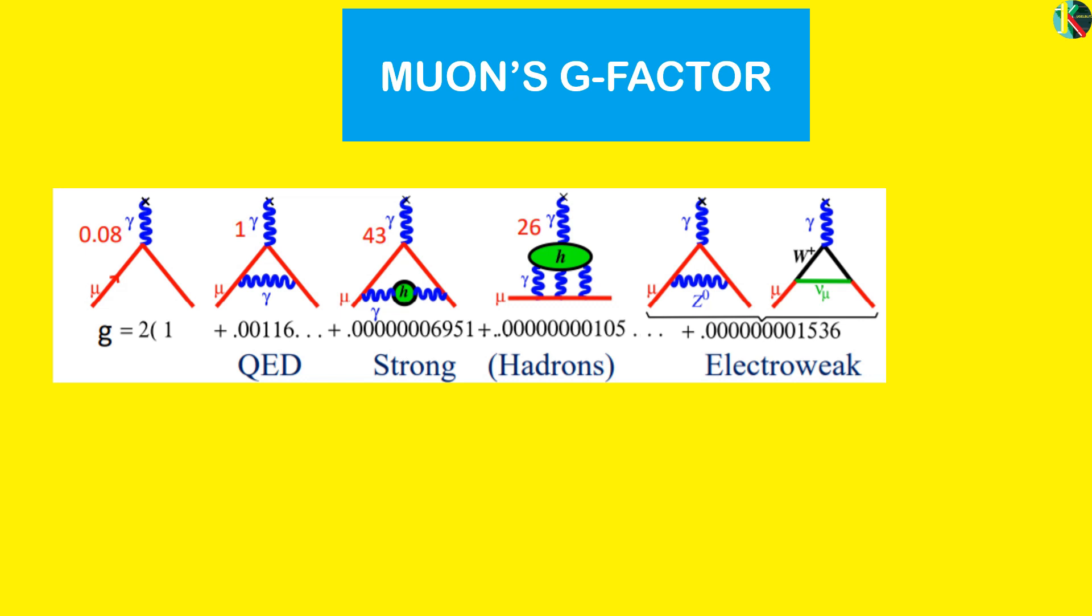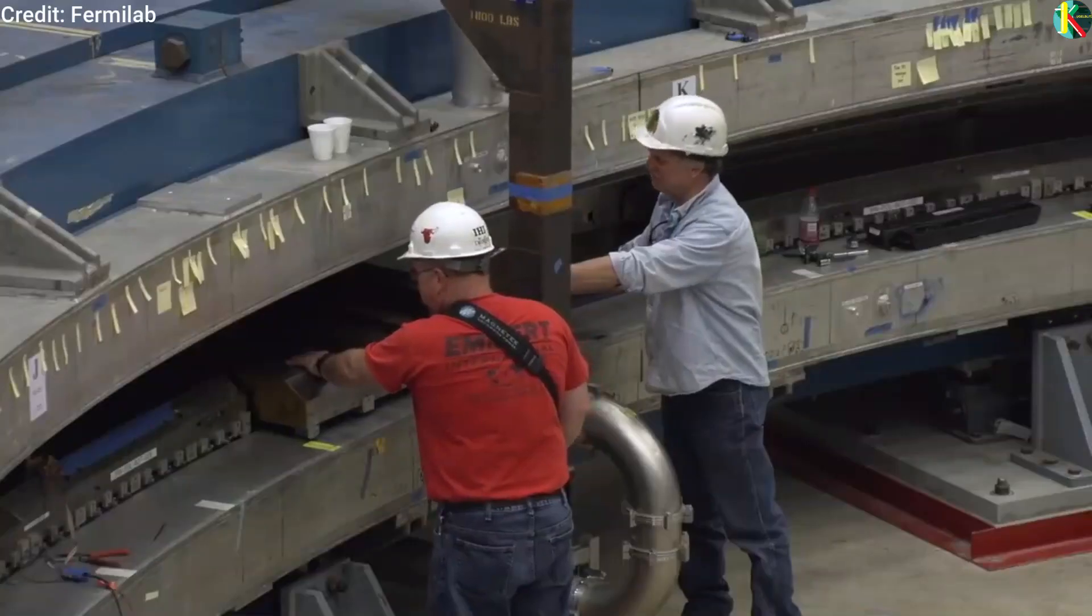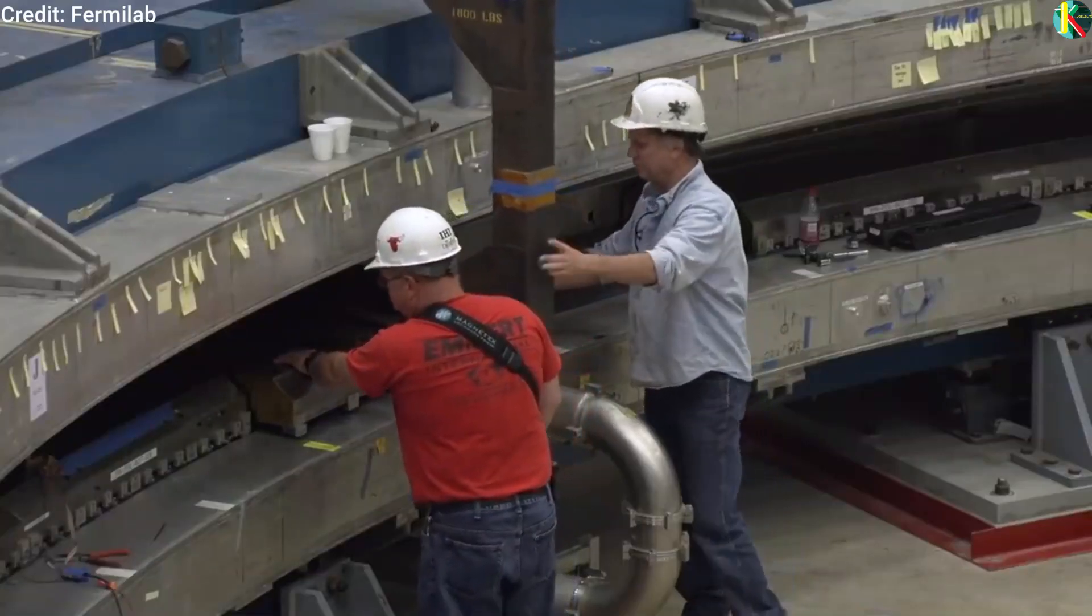For this reason the rising hope is that a yet unknown particle is at work here. So now it's time to explain the Fermilab muon g-2 experiment.